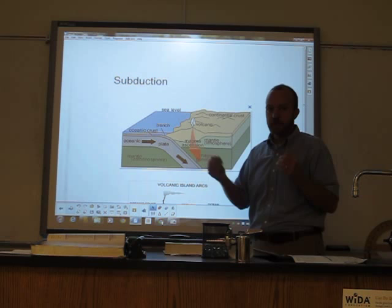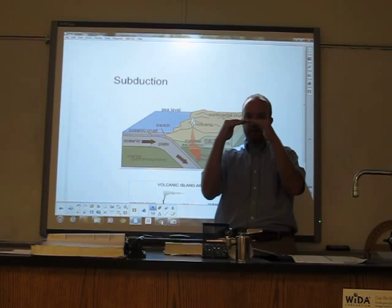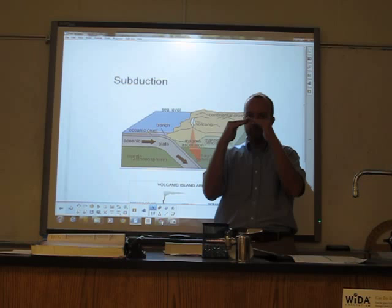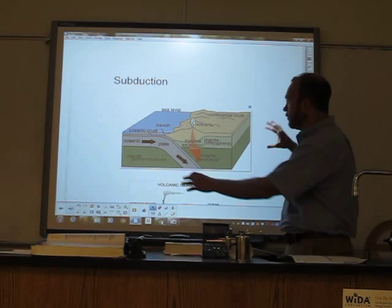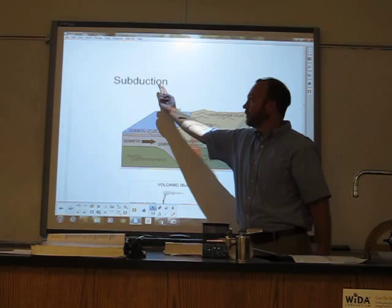As these big plates are sliding around on top of the asthenosphere, sometimes they bump into each other. One way is the plates are moving together and they collide. When plates collide, one of two things can happen: either one plate is going to be forced beneath the other — slide beneath the other — or both plates are going to collide and buckle up. We call the process of one plate being pulled underneath the other subduction. 'Sub' meaning below, 'duct' meaning moving.